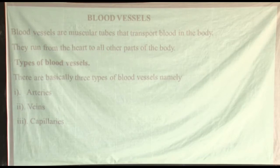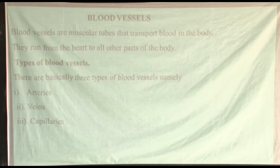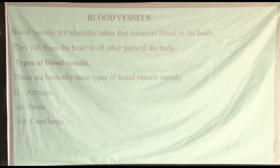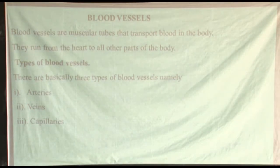We have three types of blood vessels. We have arteries, veins, and capillaries. Arteries are the largest blood vessels in the body. Veins are medium. The capillaries are the smallest blood vessels in the body.